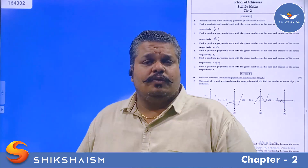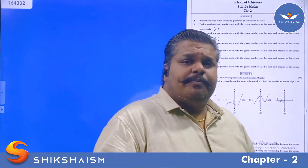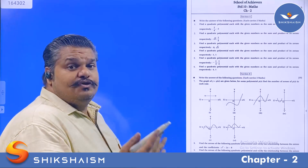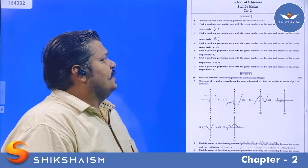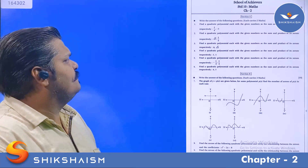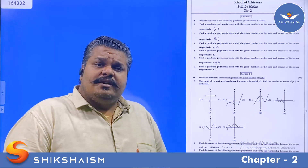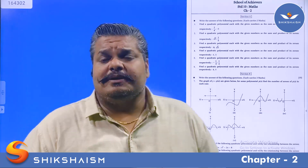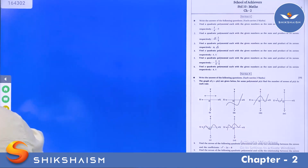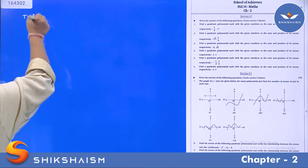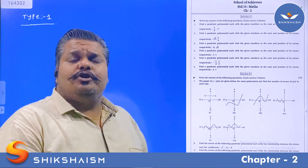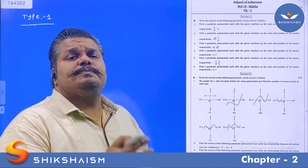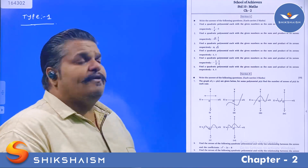The first type of questions which may be useful for preparation of the board examination: find the quadratic polynomial, each with a given number as the sum and the product of zeros respectively. In this type of question, you are provided with the sum and the product of zeros of a quadratic polynomial, and you have to determine or find the quadratic polynomial.